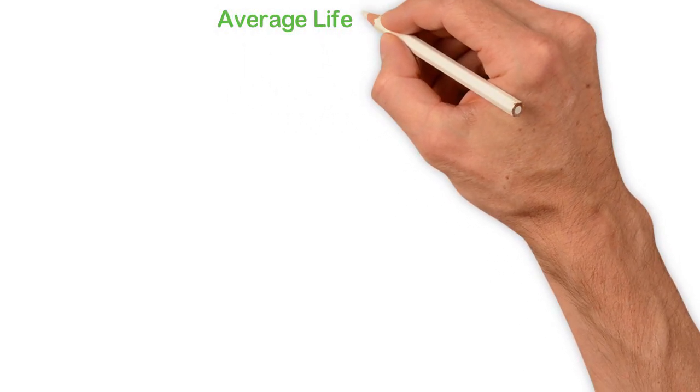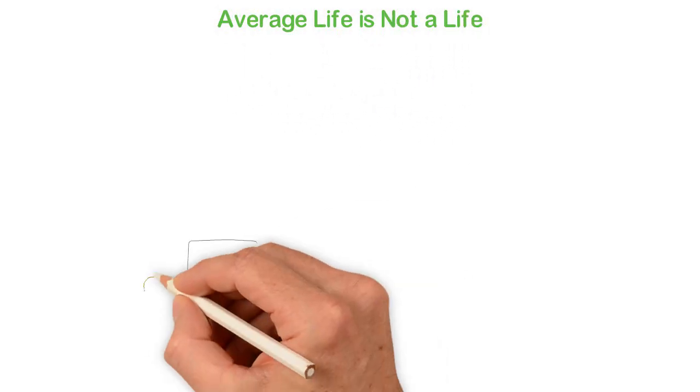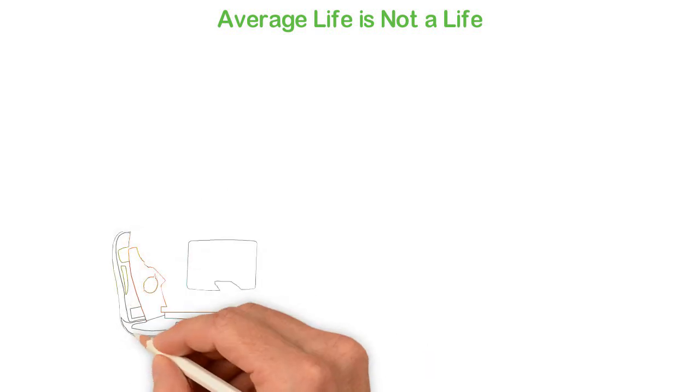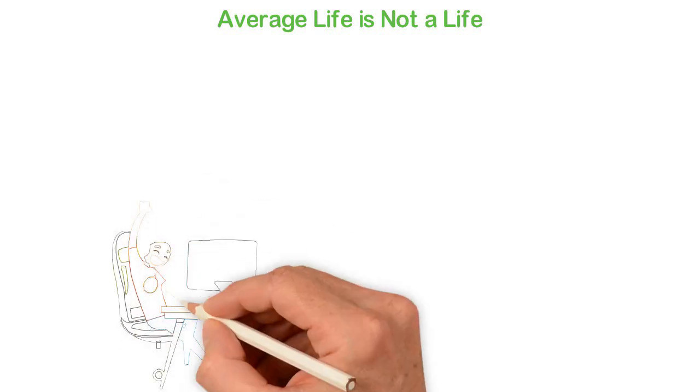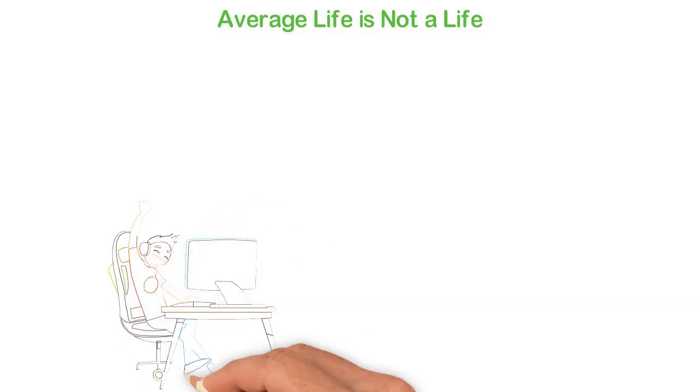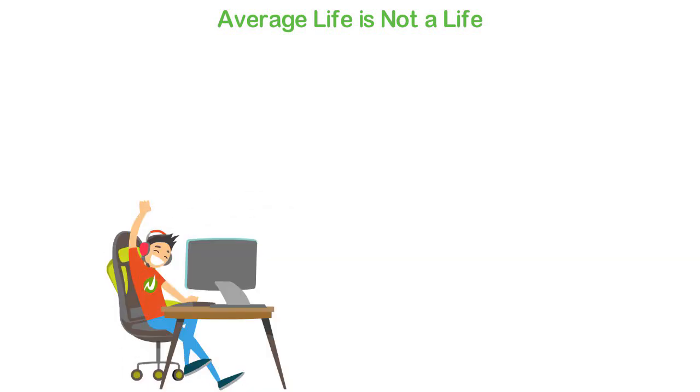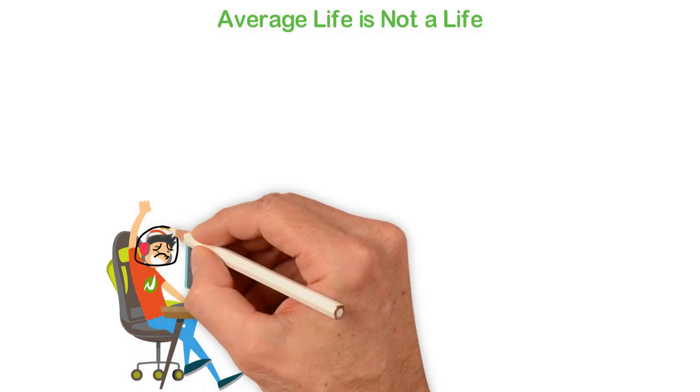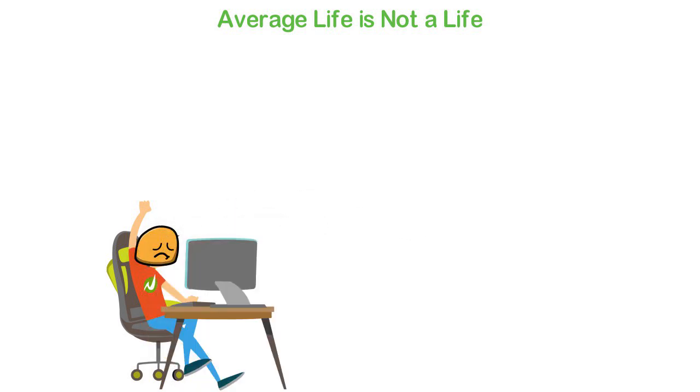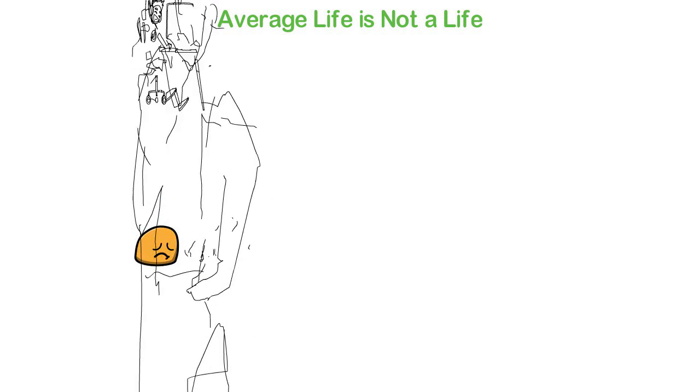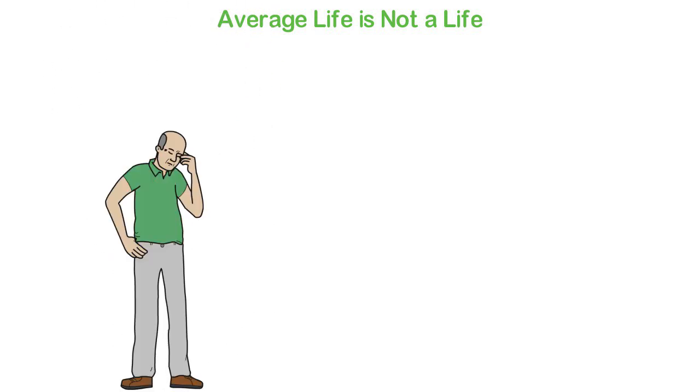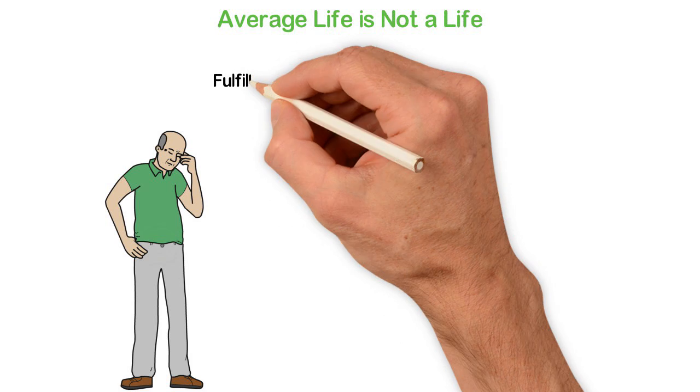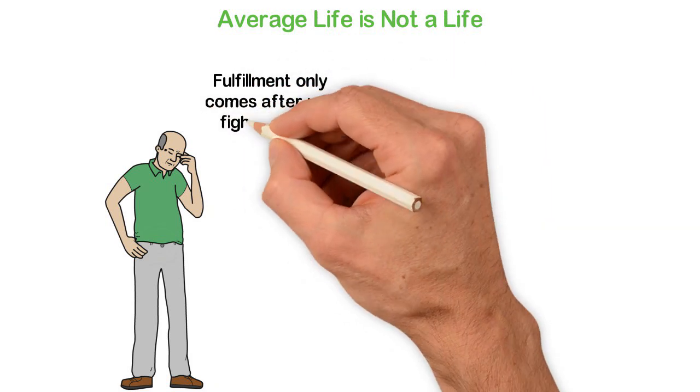Average life is not a life. I've seen so many people who are trying to take it easy with life. These people are trying to keep their life. They are trying to do what is easy. They are trying to be secured and happy in average living. The problem about this popular strategy is that average life is not a life. You either live excellently or you don't live. People who desire to live a gentle, easy, average life end with their life without fulfilment or happiness. The reason for this is because fulfilment only comes after you fight and win.